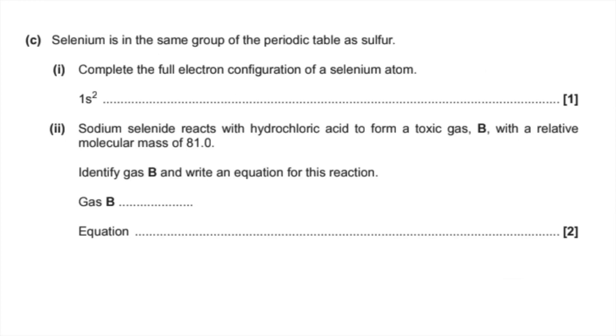And finally, part C. So the first thing we've got to do is write the electron configuration in full for a selenium atom. So because it's an atom, it hasn't lost or gained any electrons. So just go to your periodic table. Look at how many protons it's got. It's got the same number of electrons, so 34. And then the paper has given you the starting point. So the first subshell to fill is 1s, and so that's 1s2. And then you just pick it up from there.